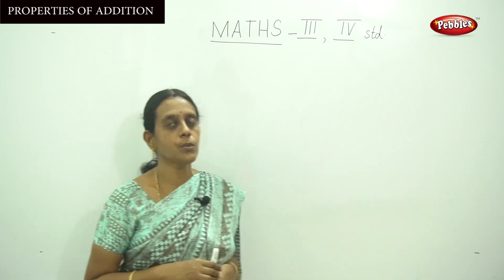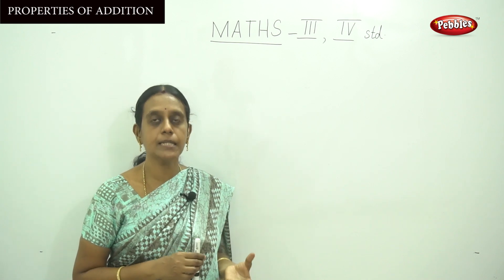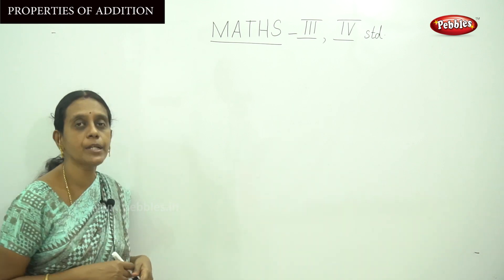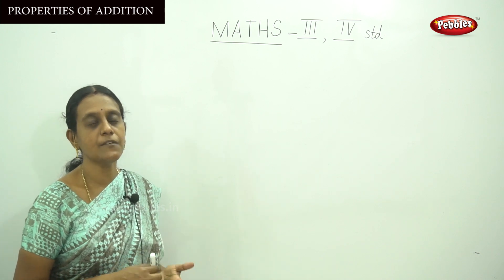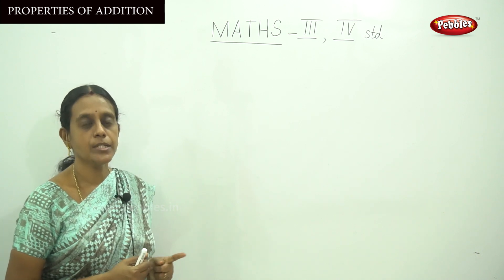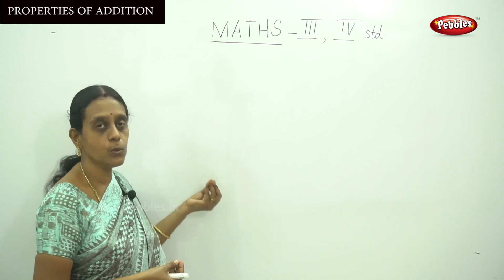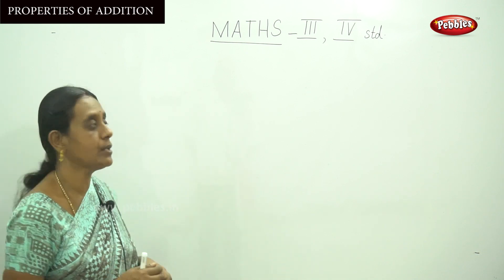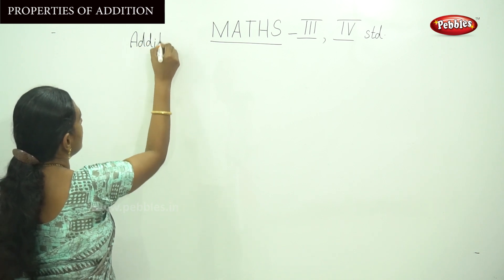Now we are going to learn a few more example sums that explain the properties of addition. The first property of addition is that if you add 0 with any number, it gives the same number. The second rule is if you add 1 to any number, that gives the successor of the number.